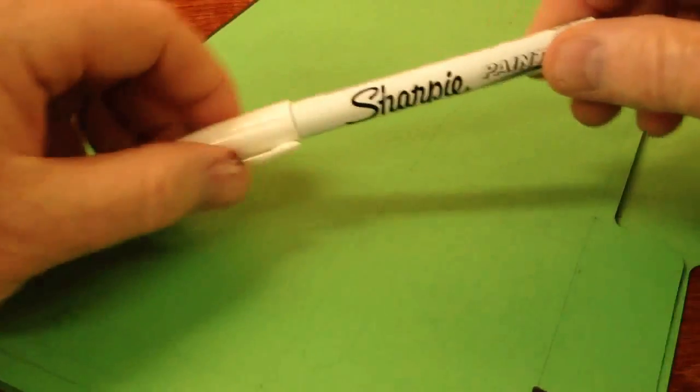I was going to use a white paint marker for the lines, but the paper just soaks it up and you really can't see it. So mine is going to be black.